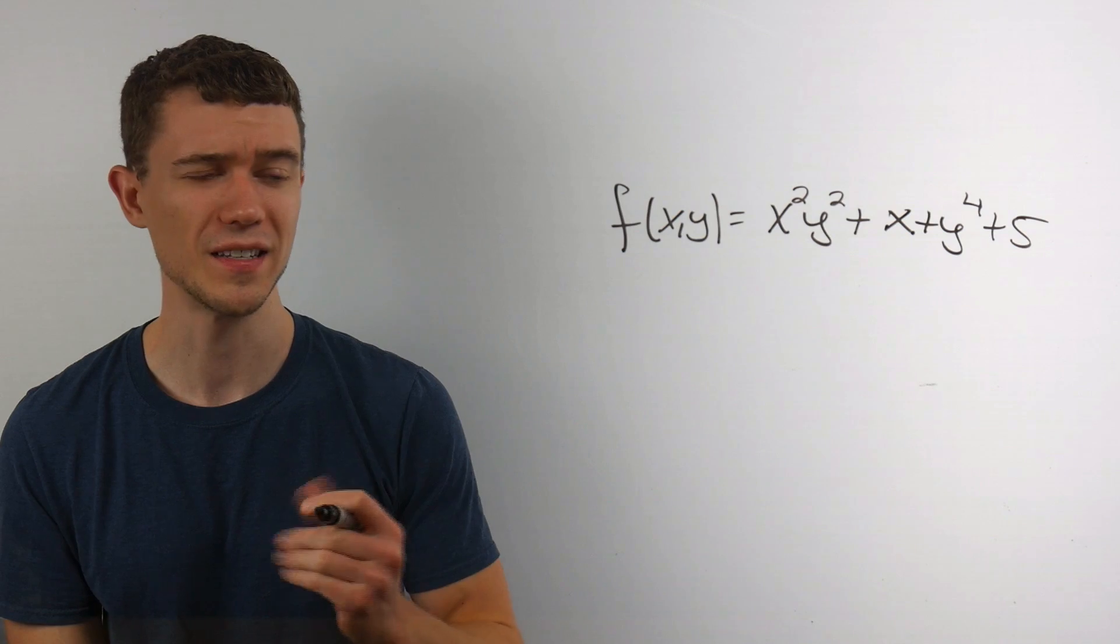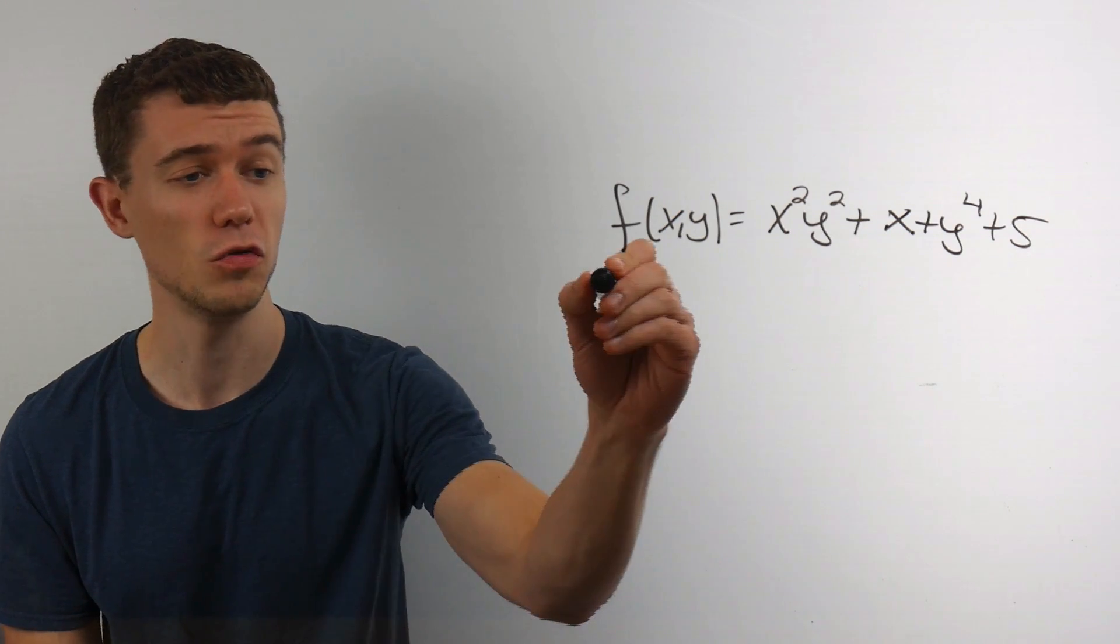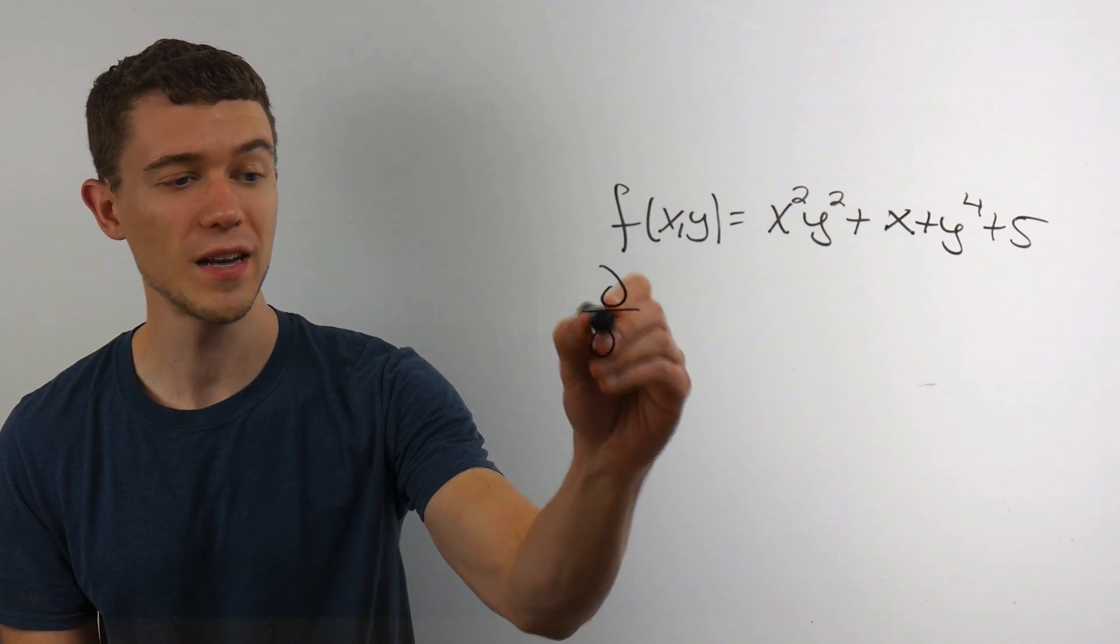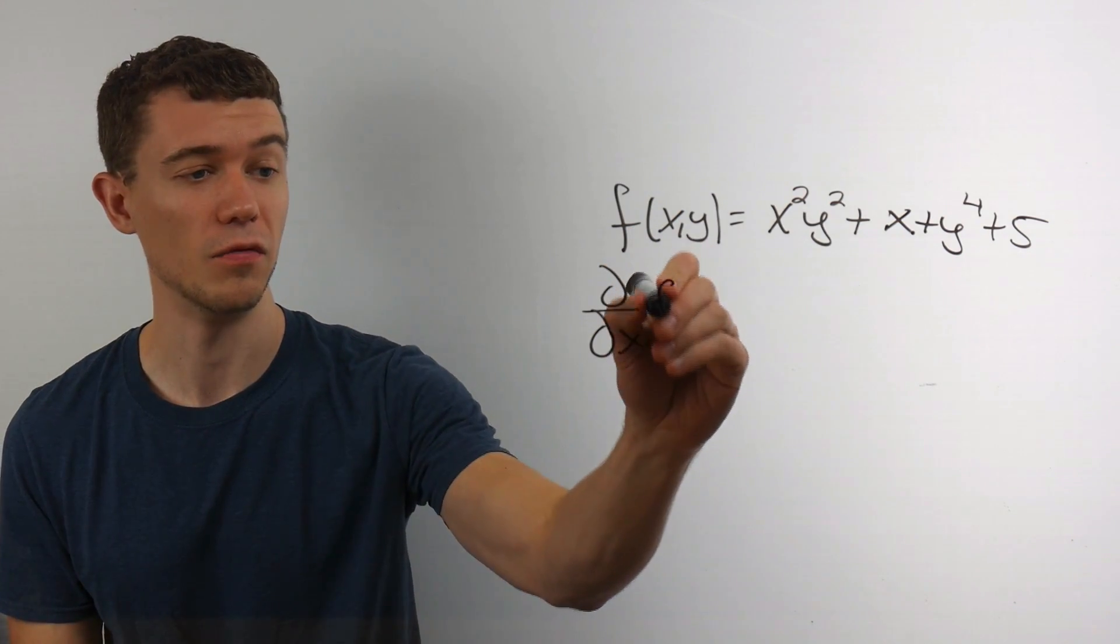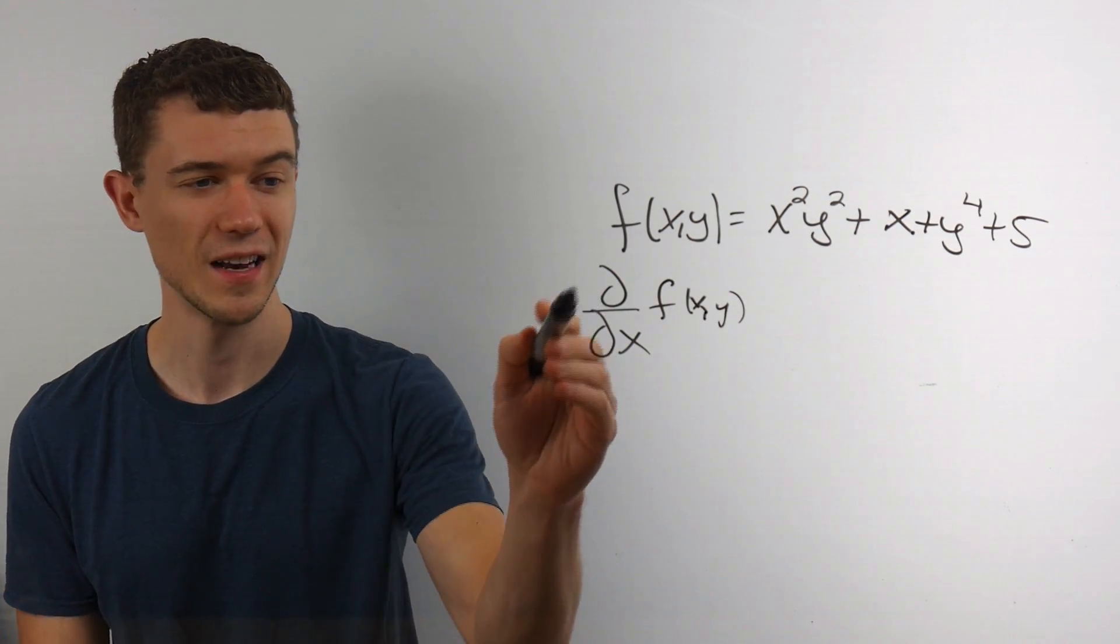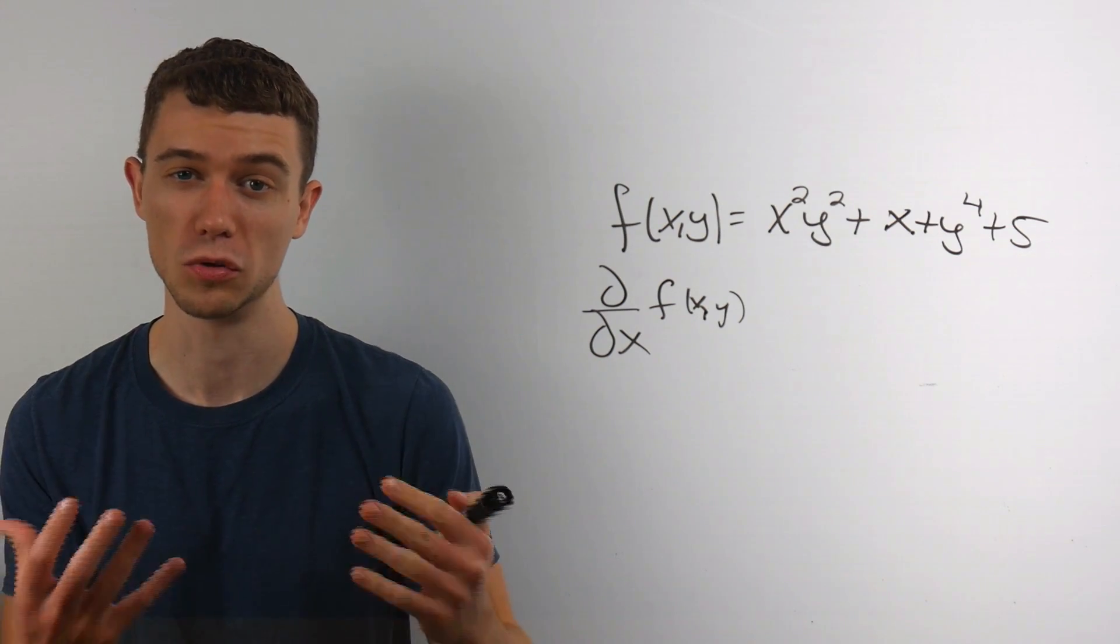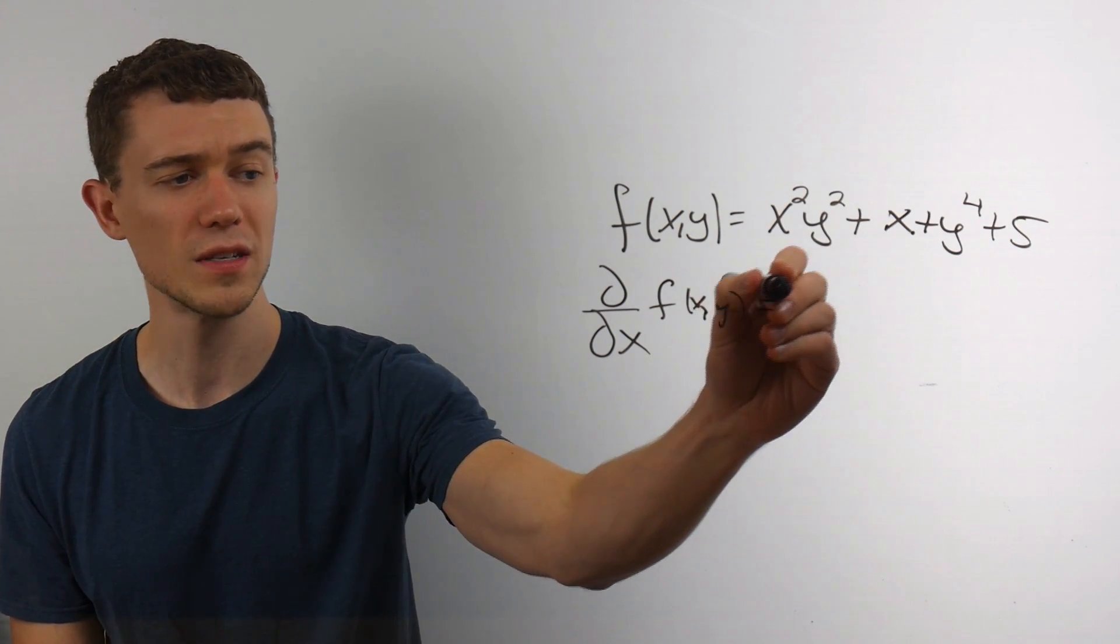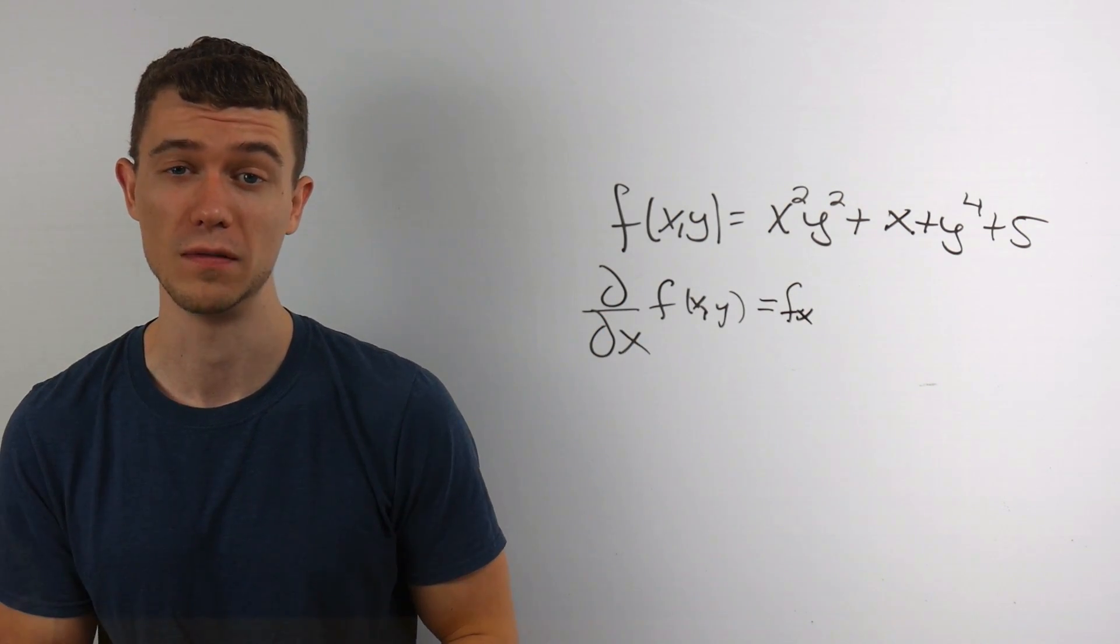There's different notations you might see. If this is my function, a function of x and y, a two variable function, we could take the partial derivative with respect to x of this function. And this is the notation that you might see, this curly backwards d thing. This signifies partial derivatives. You might also see f sub little x. This is also a notation for partial derivatives.